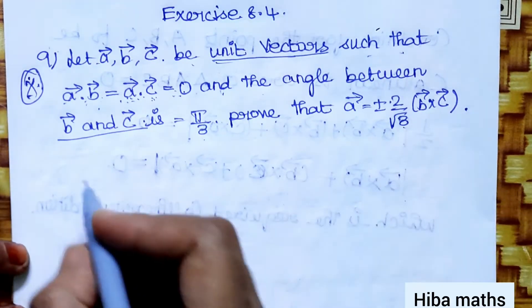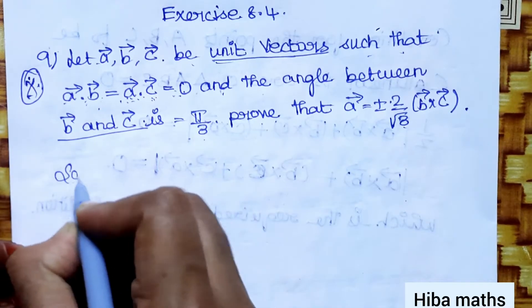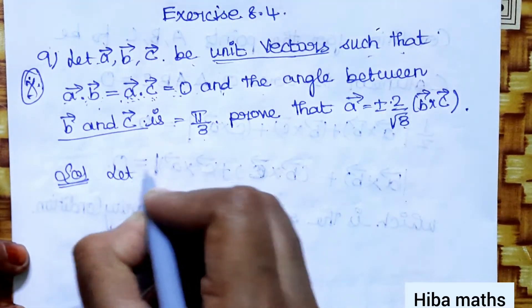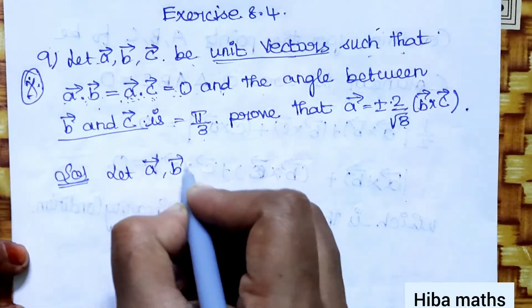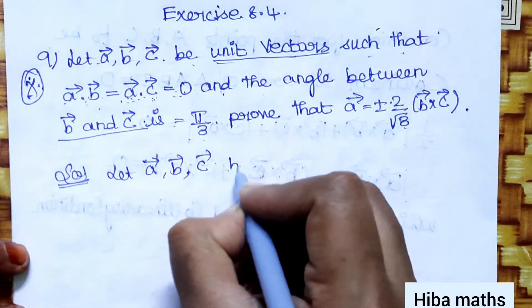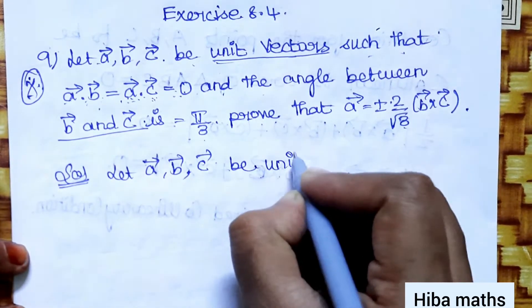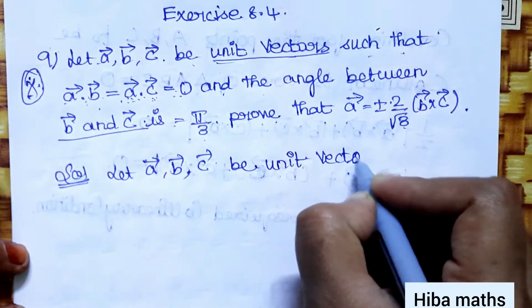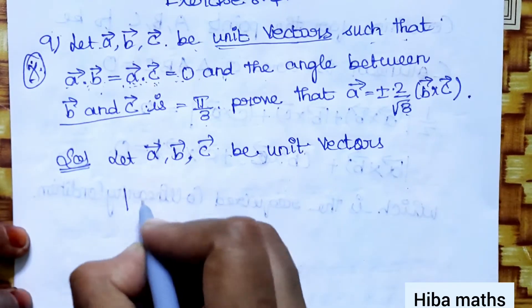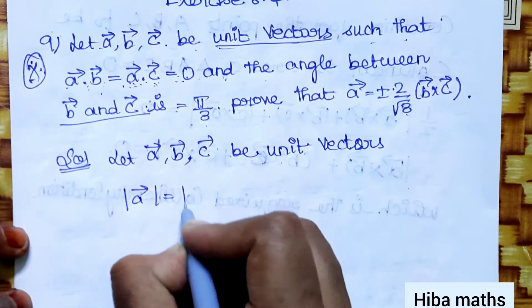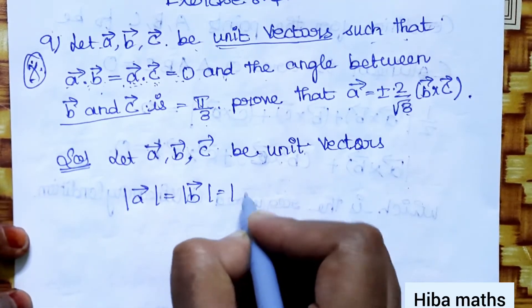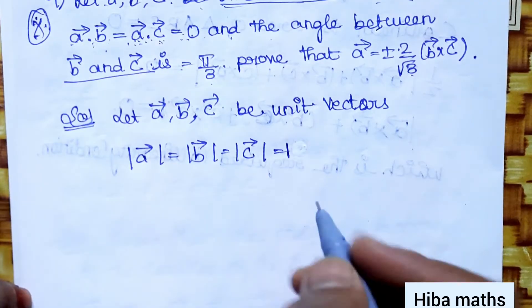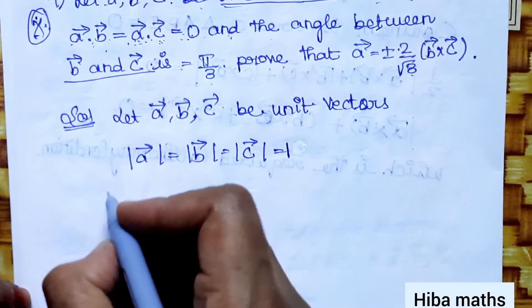This is what we will prove. The solution: given A vector, B vector, C vector are unit vectors. The condition for unit vectors is that the modulus of A vector = modulus of B vector = modulus of C vector = 1. We will use this condition.